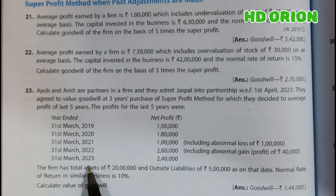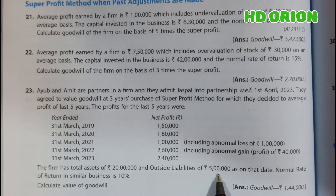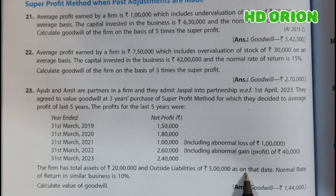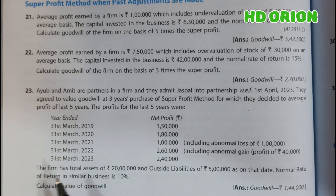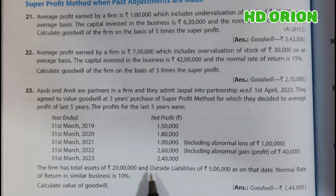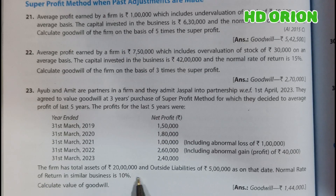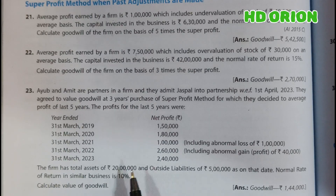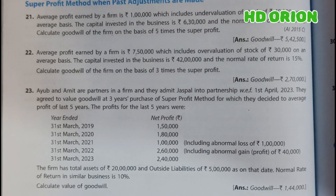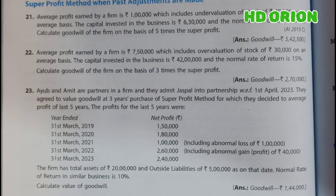For 2023, profit is ₹2,40,000 which is a normal figure. The firm has total assets of ₹20 lakh and outside liabilities of ₹5 lakh as on that date. Normal rate of return in similar business is 10%. From these assets and liabilities we will calculate capital employed by subtracting outside liabilities from total assets.